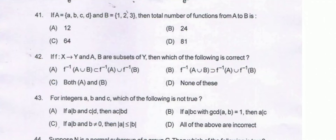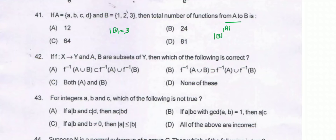In this video, we are going to discuss the solutions of question number 41 to question number 50. Question number 41: if A is a set containing elements A, B, C, D and B is a set of 1, 2, 3 elements, then the total number of functions from A to B is cardinality of B to the power cardinality of A. Cardinality of B is 3, cardinality of A is 4, so 3 to the power 4 is 81. Option D is the correct option.